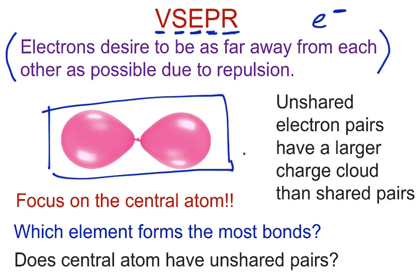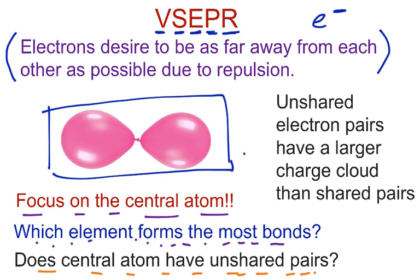In terms of drawing the shapes, we must focus on the central atom — it's very, very important that we do that. The question might come about: how do you know which atom is the central atom? We want to look at the valence electrons and figure out which element forms the most bonds. That atom is the best bet to be your central atom. Another critical question is whether the central atom has unshared pairs on it, because unshared pairs on the central atom influence the shape of that molecule. Also, unshared electron pairs have a larger cloud than shared pairs, which also influences shape.